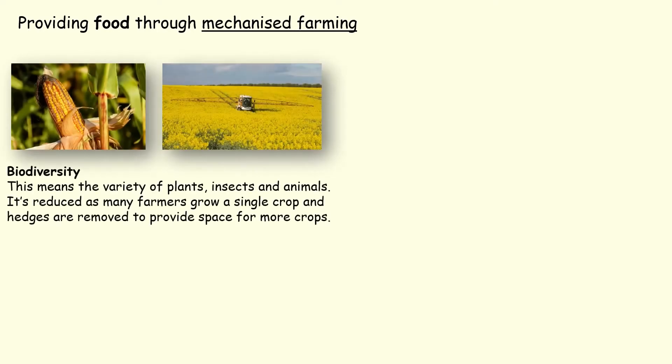Let's start with providing food through mechanized farming. All mechanized means is using machinery in order to get us our crops. Now the first problem with this type of farming is we are lessening the amount of plants and animals that we have in the countryside.